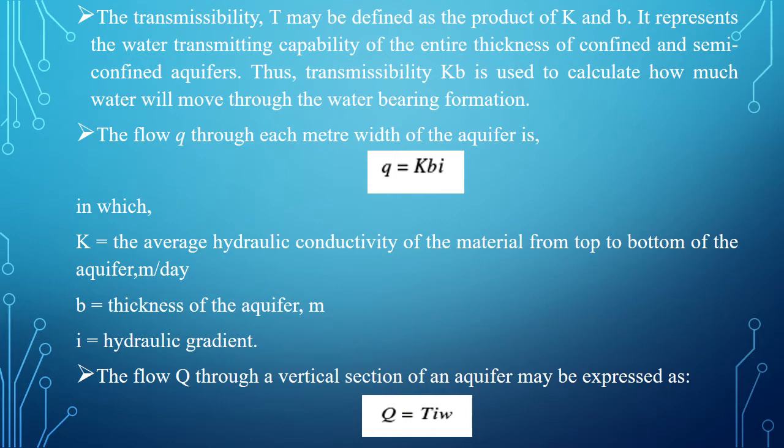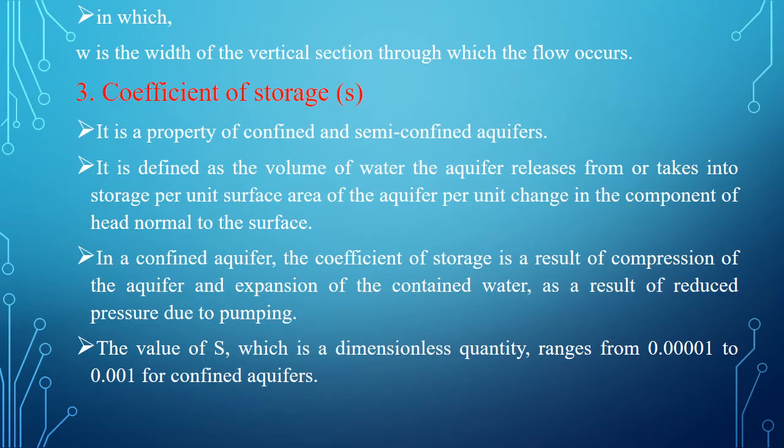The flow q through a vertical section of the aquifer may be expressed as q equals T into I into W, where capital T is the product of hydraulic conductivity and thickness of the aquifer, that is KB. So q equals KB into I into W, where I is taken as unit, that is 1, and W is the width of the vertical section through which the flow of water occurs.